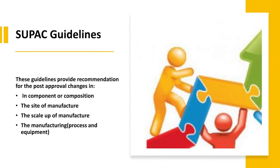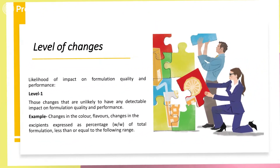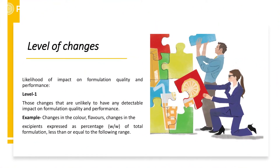The SUPAC guidelines review post-approval changes categorized into four areas: formulation or excipient changes, site of manufacturing, scale of manufacturing or batch size, and manufacturing process or equipment. For example, Level 1 changes include change in form, color, flavor, or concentration of excipients. A color change is not expected to impact bioavailability or bioequivalence, so it is categorized as a Level 1 change.